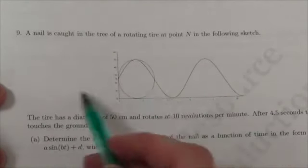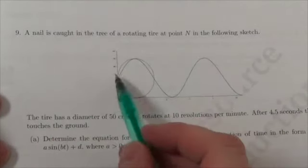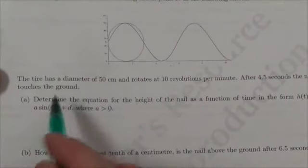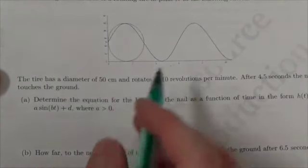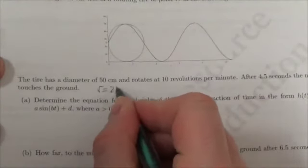So what we got to do is come up with the equation of this graph here. It says a nail is caught in the tread of the tire at point N, and we're given some specific information here. The tire has a diameter of 50 centimeters. That is telling me immediately that the radius is equal to 25.